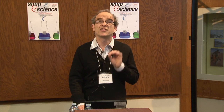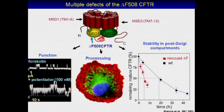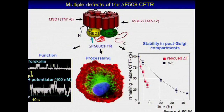The three major dysfunctionalities or biological defects of delta-F508 CFTR are illustrated here. First, channel opening is impaired. Second, the channel is predominantly retained — labeled in green — inside the cells at the endoplasmic reticulum and cannot reach the cell surface. Third, if it does reach the cell surface, the molecule is metabolically very unstable.